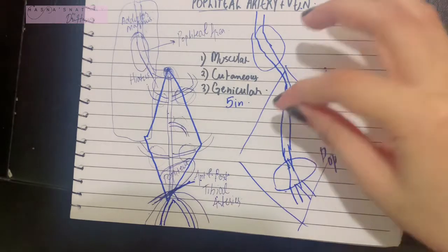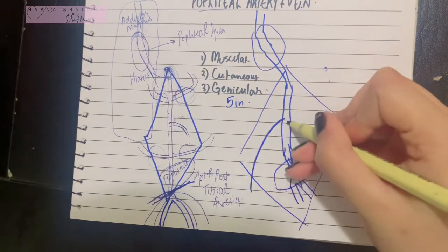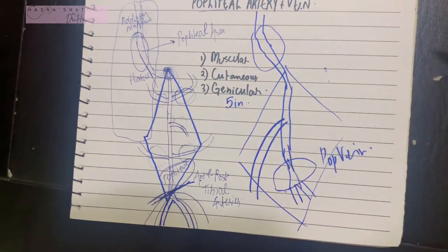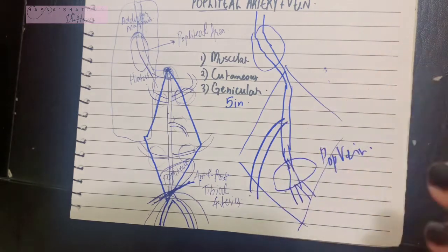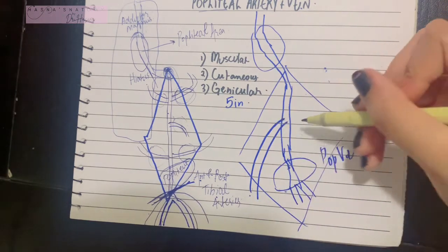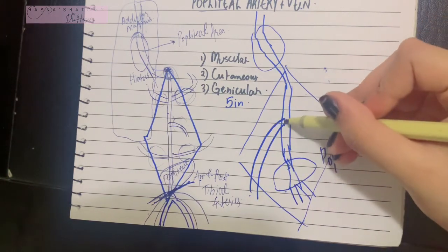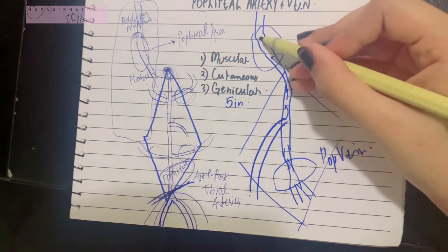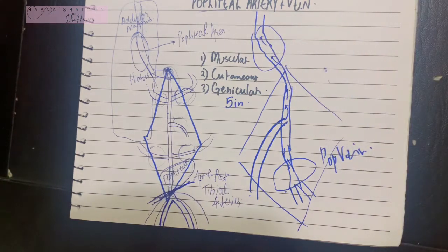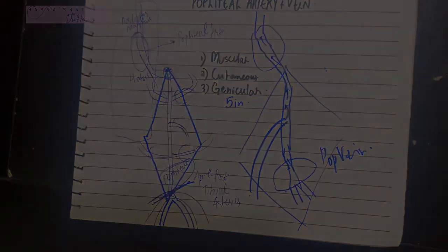The tributaries of the popliteal vein correspond to the branches of the popliteal artery. In addition, the small saphenous vein — a superficial vein we will discuss later — drains into the popliteal vein. This concludes the entire course, origin, termination, branches, and tributaries of the popliteal vessels. Thank you so much for watching.